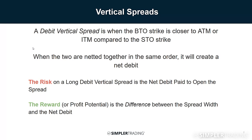A debit vertical spread - also known as a debit spread or long debit vertical - is when the bought-to-open strike is closer to at-the-money or in-the-money compared to the sold-to-open strike. When the two are netted together within the same order ticket, it will create a net debit. When you're looking to open a debit vertical spread, one way you know you have your strikes set correctly is that it should always end up creating a net debit when opening both strikes in the same order ticket.